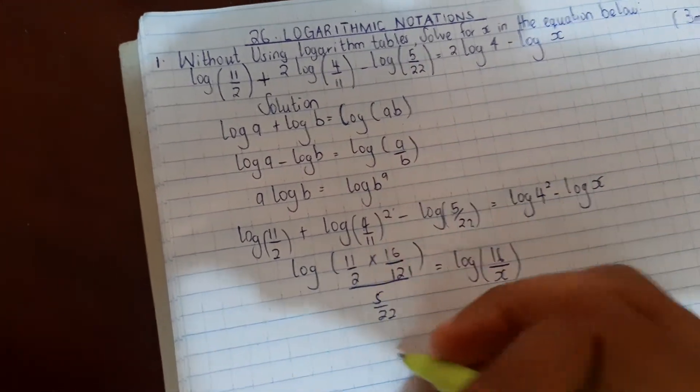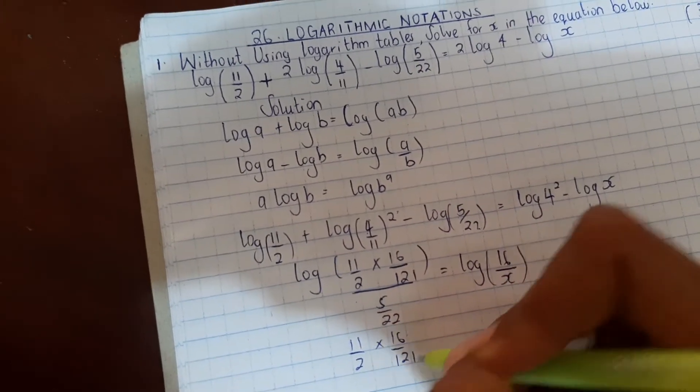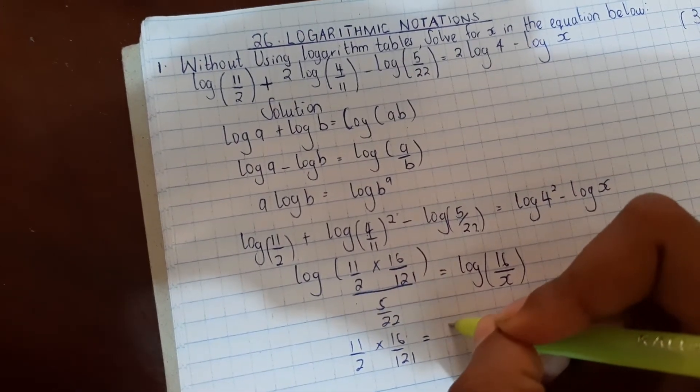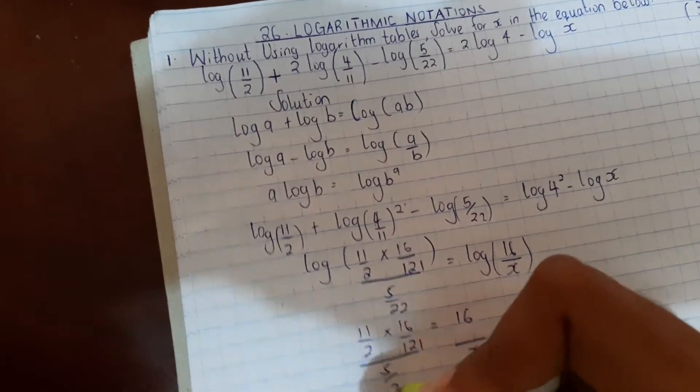So here we have 11/2 times 16/121 equals 16/x. And here we have over 5/22.